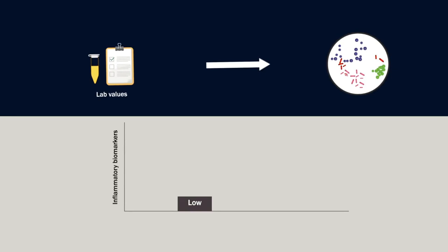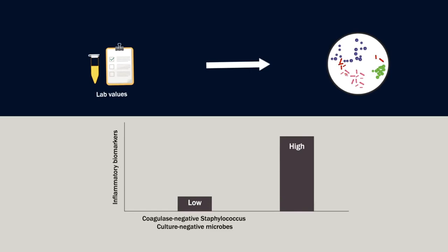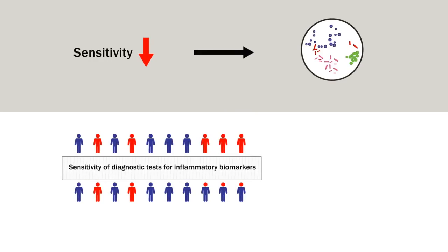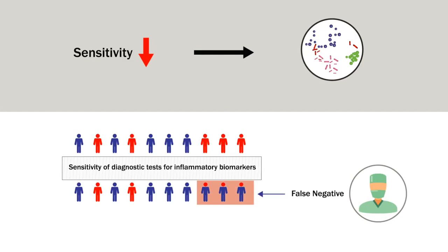Results showed that lab values were highly dependent on the type of organism, with these values being generally lower in patients with coagulase-negative staphylococcus and culture-negative infections, and higher in patients with staphylococcus aureus and antibiotic-resistant infections. Considering that the sensitivity is low for certain organisms, the results indicated that surgeons should be cognizant that there may be a higher rate of false negatives with certain organisms.